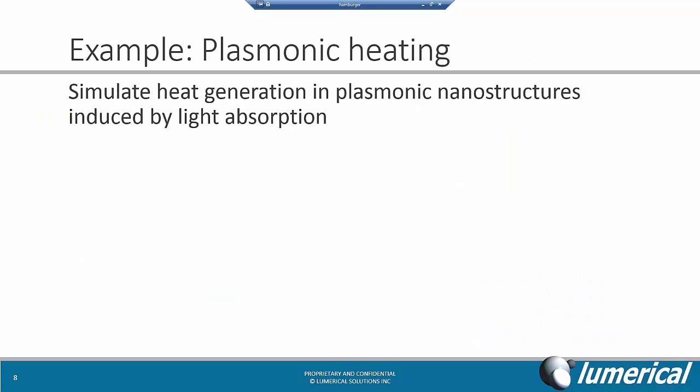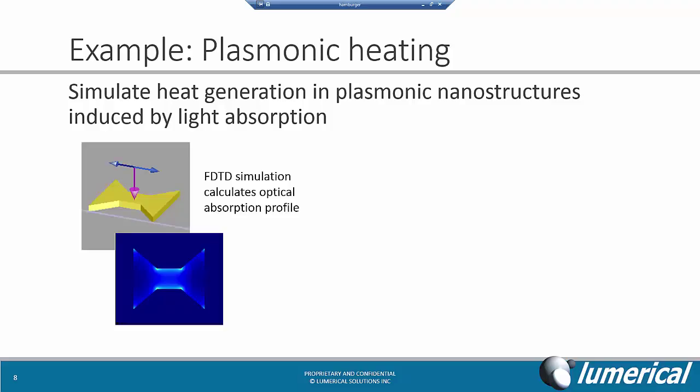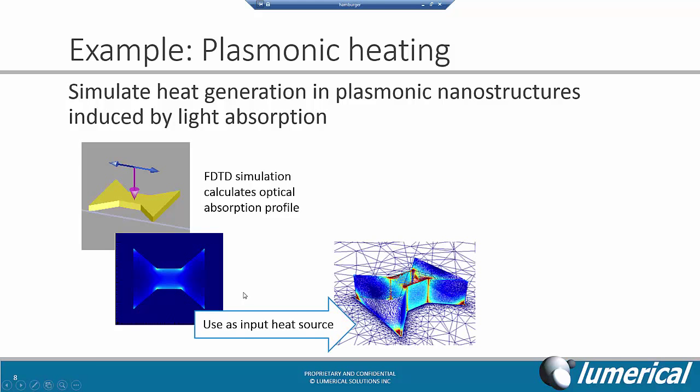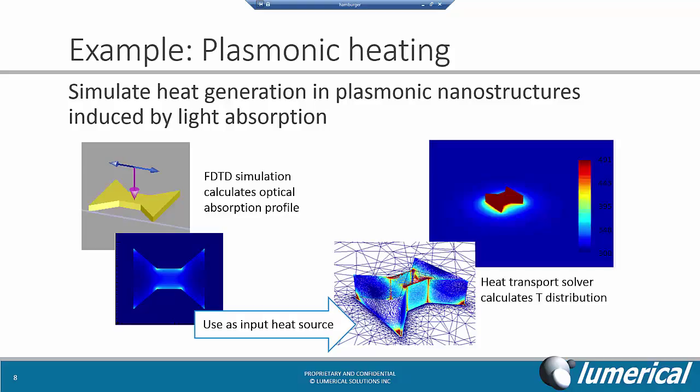Another example is plasmonic heating. Here we want to simulate the heat generation in plasmonic nanostructures, induced by light absorption. We'll start with FDTD simulation to calculate the optical absorption profile. This absorbed power is then used as the input heat source in the heat transport simulation. You can see that the simulation mesh automatically adapts based on the geometry, as well as the input heat profile. Then we can run the heat transport simulation to calculate the temperature profile for this structure.